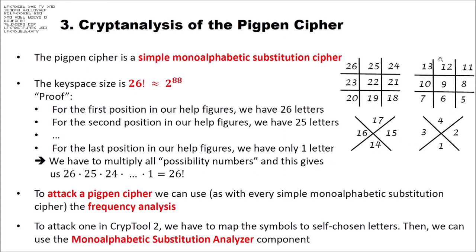Of course, in each position all letters are possible — we have to distribute all 26 letters over all 26 positions. So how can we attack a Pigpen cipher? To attack a Pigpen cipher is rather easy. We can use, as with every simple monoalphabetic substitution cipher, frequency analysis. You take your encrypted text, count the symbols, look for the symbol which appears most often in the ciphertext — that is probably the E — then go on with the second most probable letter and so on. You can easily decrypt the Pigpen cipher using frequency analysis.